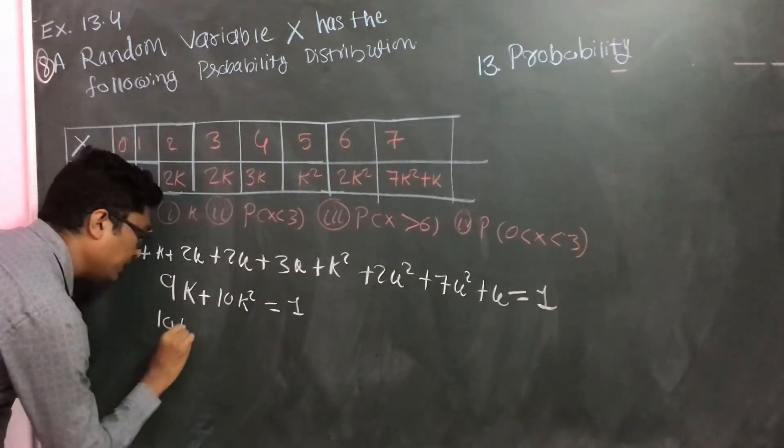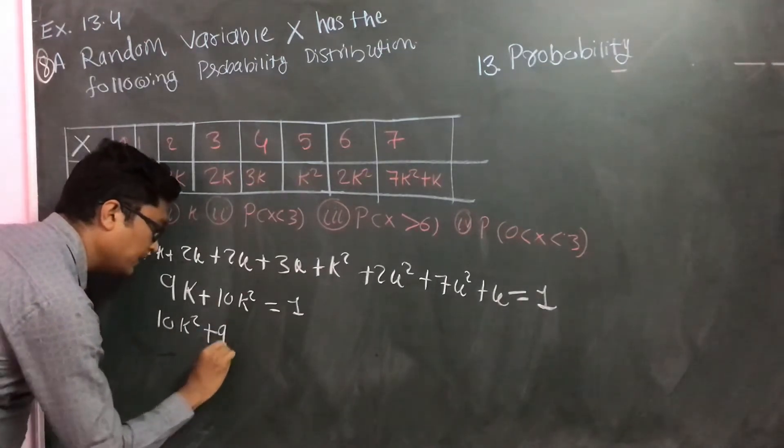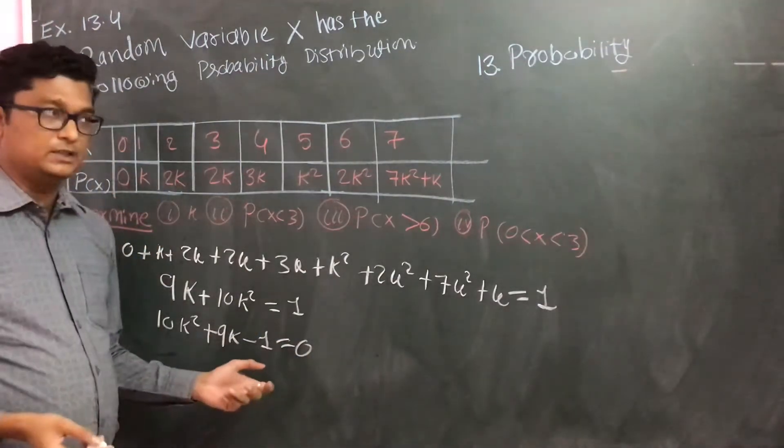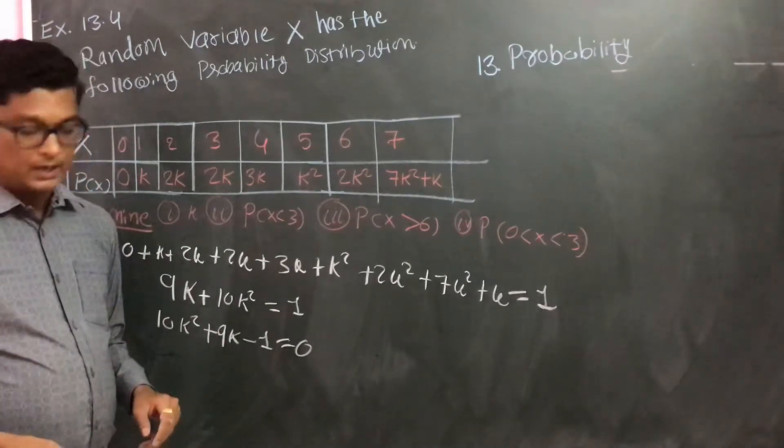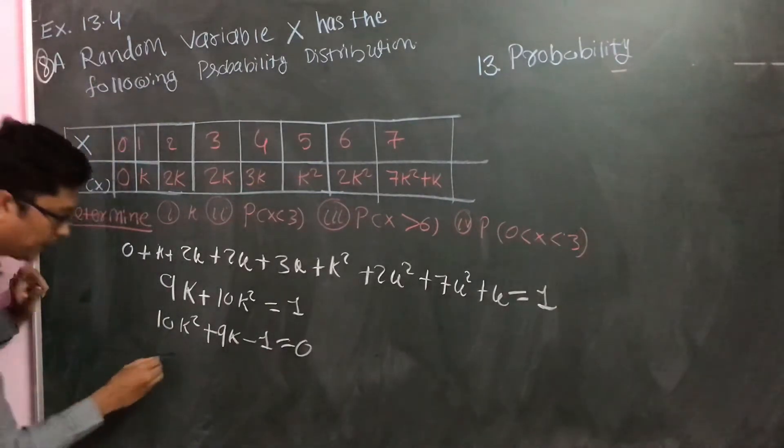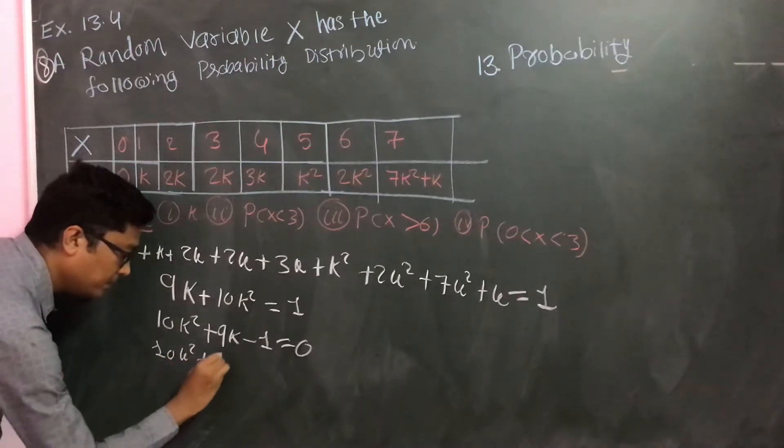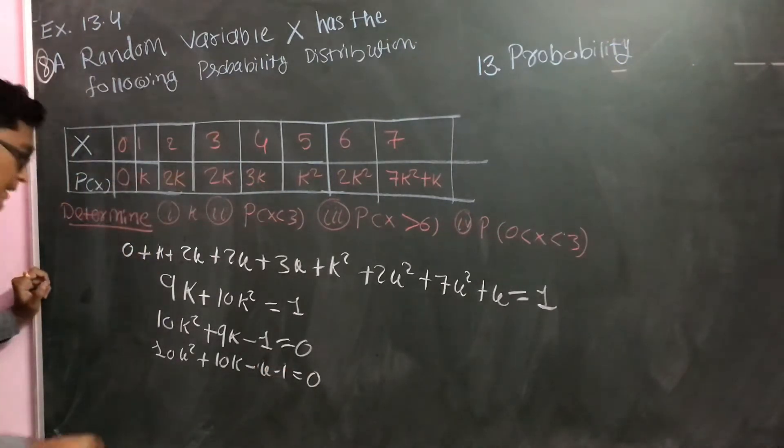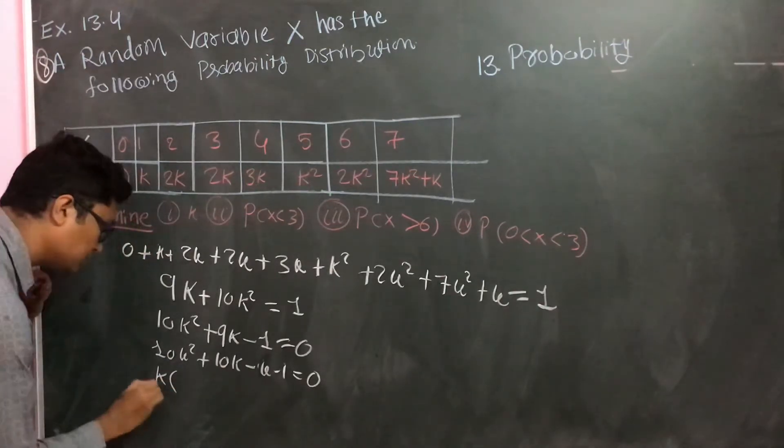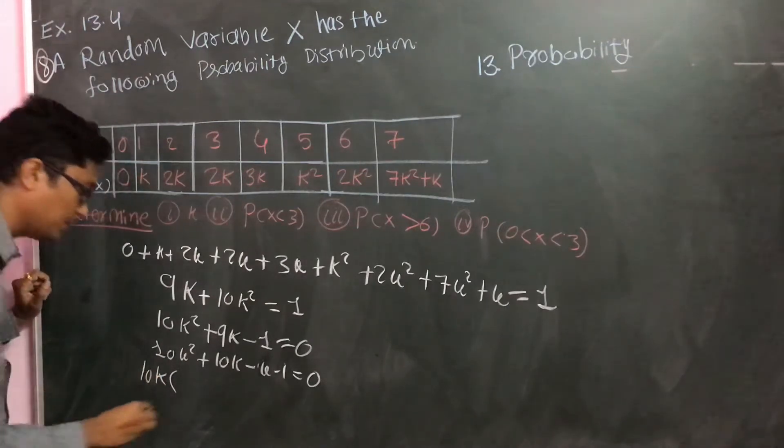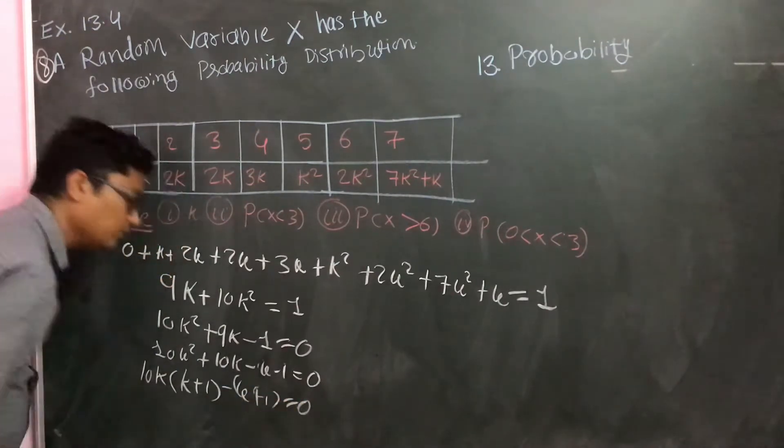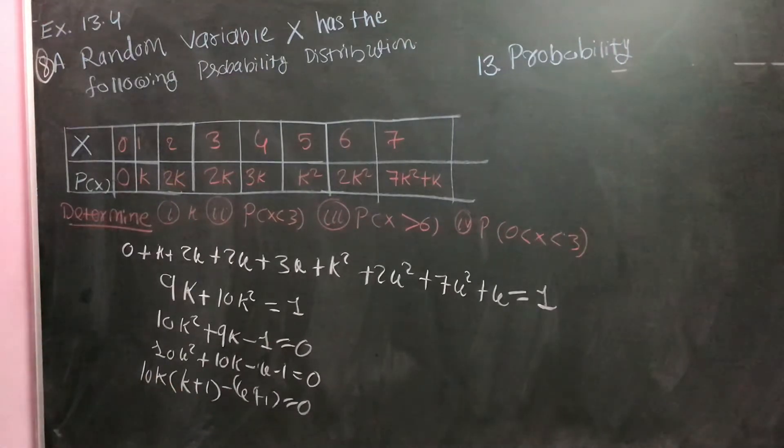I can put it like this: 10k square plus 9k minus 1 equals 0. So now I can write it like this: 10k square plus 10k minus k minus 1 equals 0.